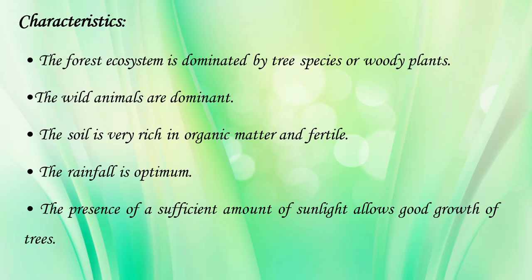Now, what are the typical characteristic features of any forest ecosystem? The main characteristic features include that it is dominated by tree species or woody plants. Wild animals like tiger, elephant, and lion are dominant. Soil is very rich in organic matter and fertile due to the availability of leaves. Rainfall is optimum, and the presence of sufficient sunlight allows good growth of the forest ecosystem.